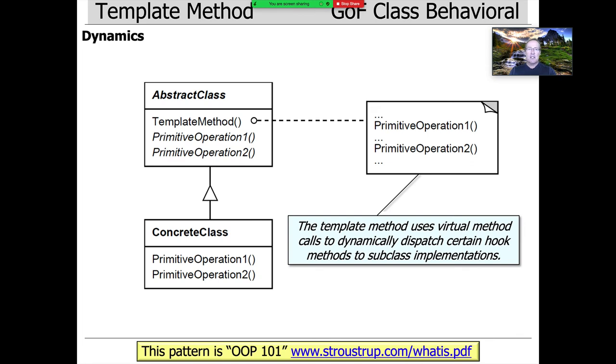The template method itself is written in terms of these hook methods, and you can have many of them, you can have few of them, you can conditionally call them, but the key point is that the algorithm defined by the template method is typically fixed. It does these steps in a particular way in a particular order at a particular time, and then those steps can be overridden by the subclasses.